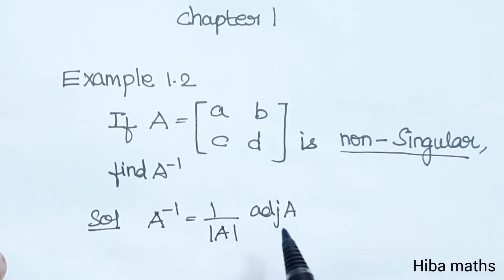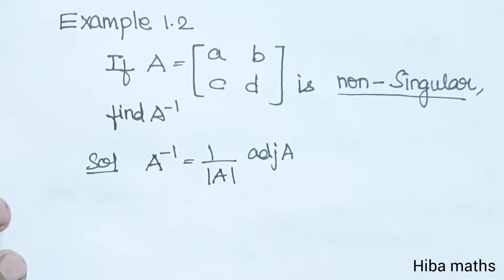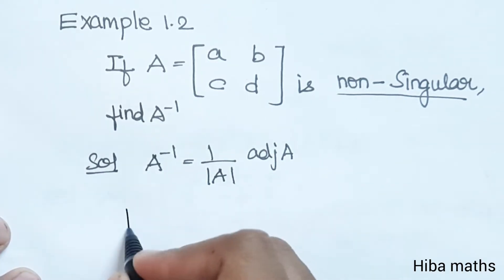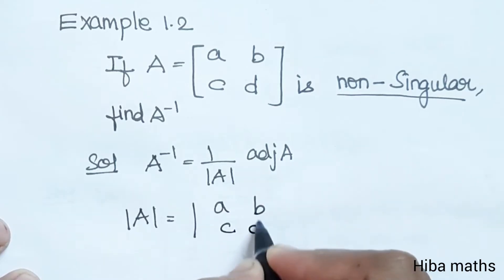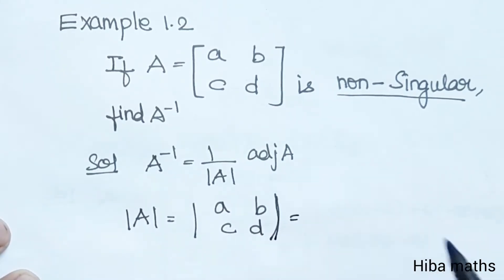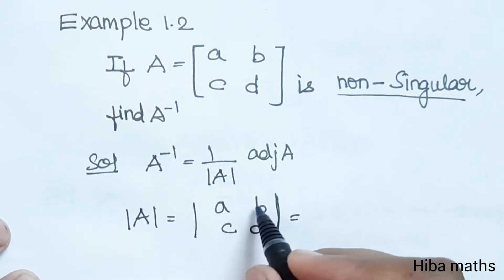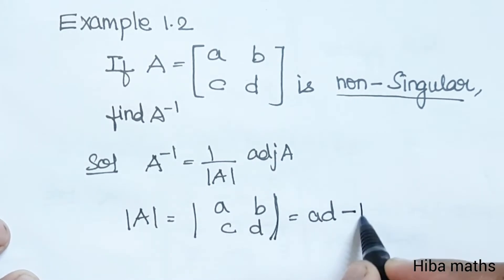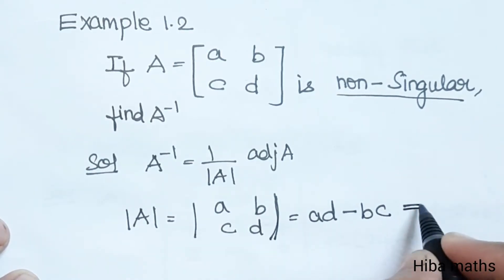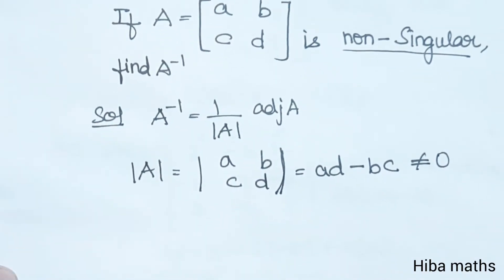First, find the modulus of A. Modulus of A equals [[a, b], [c, d]]. This number multiplied by this number minus this number, so ad minus bc. And it is not equal to 0, because it is non-singular.